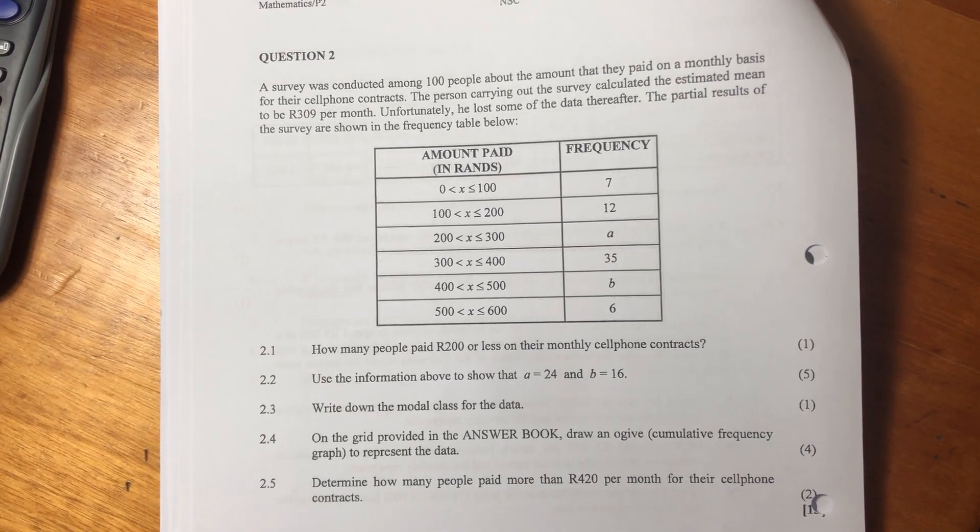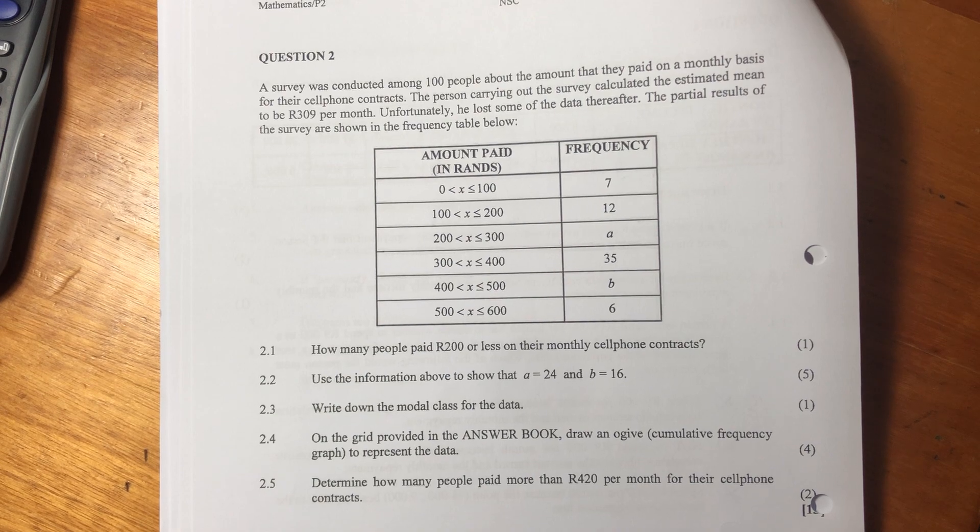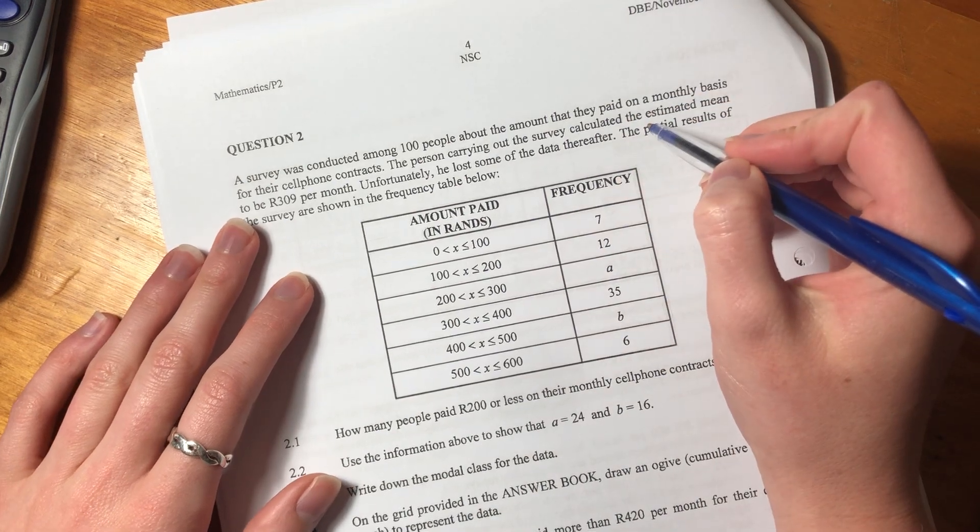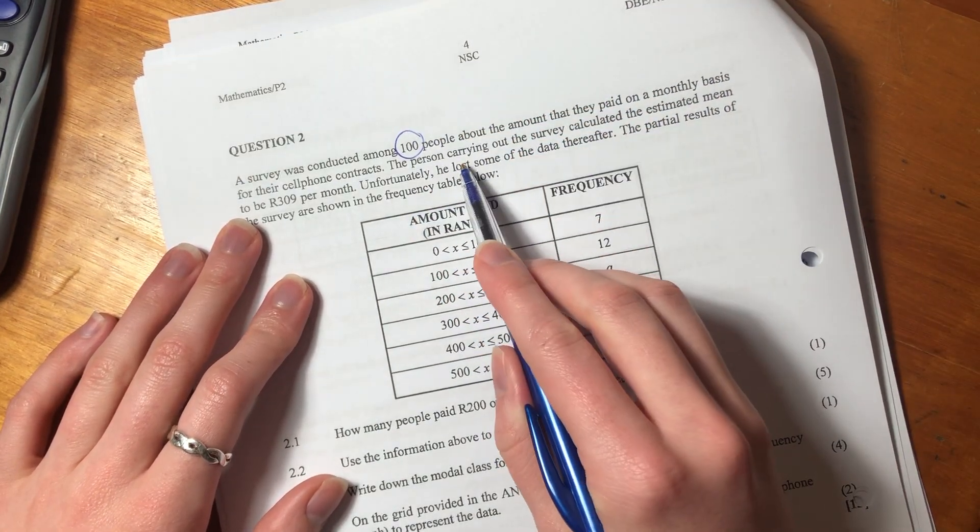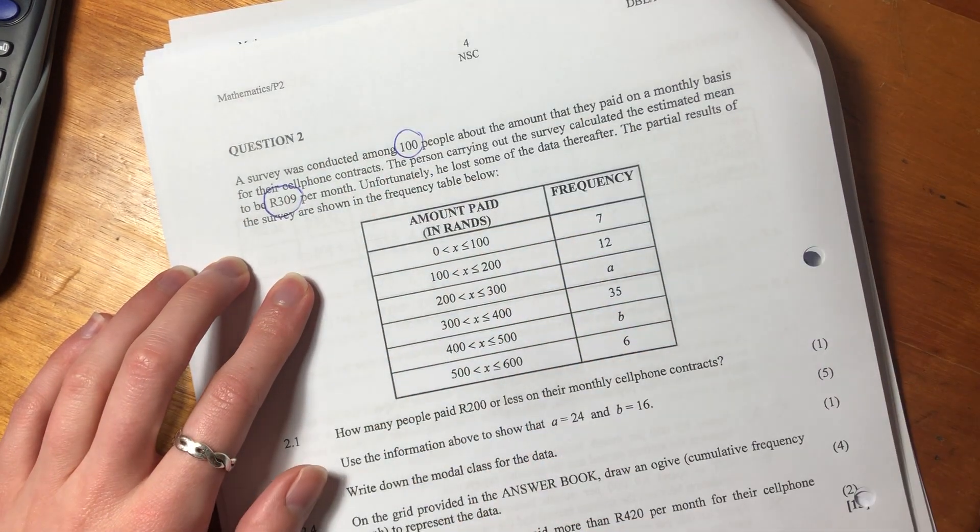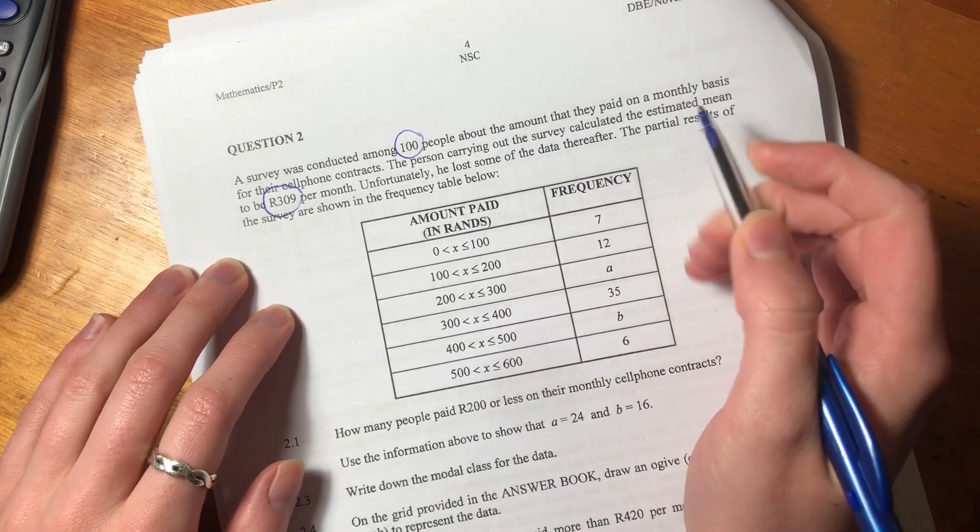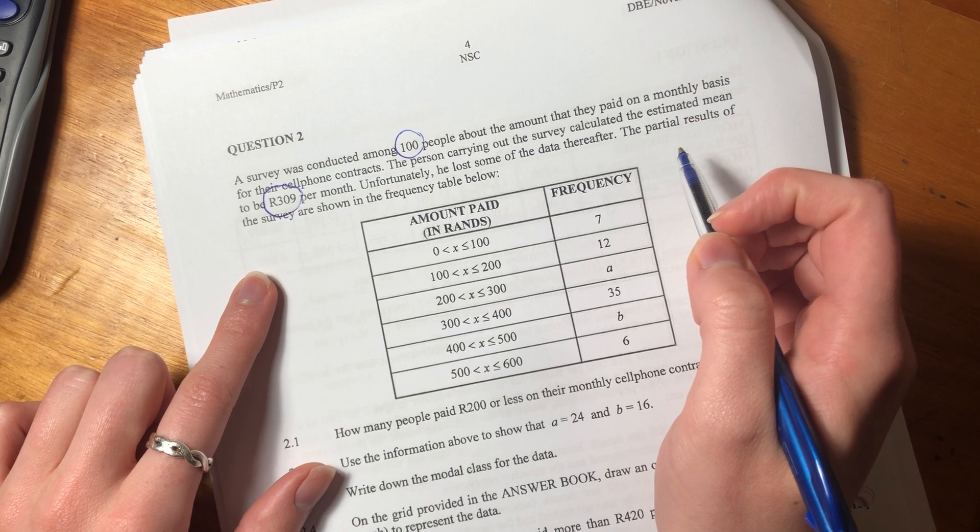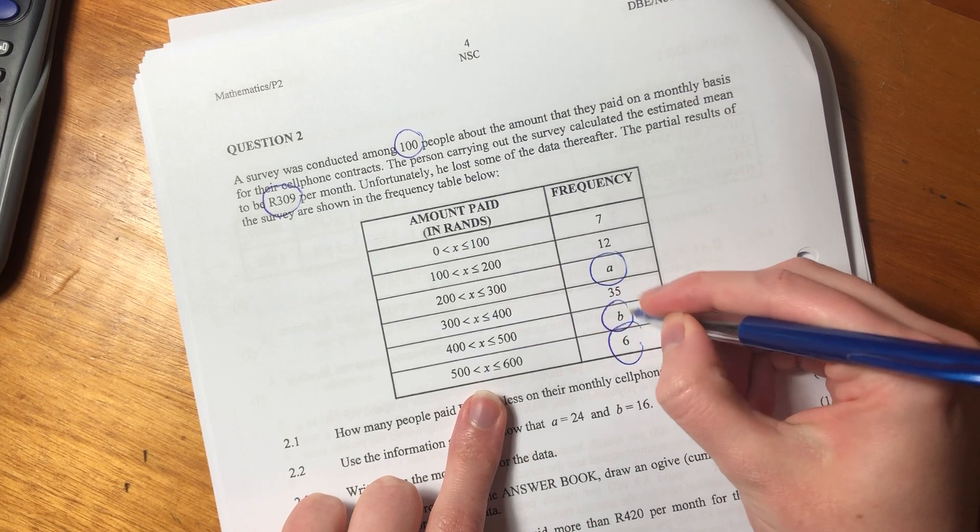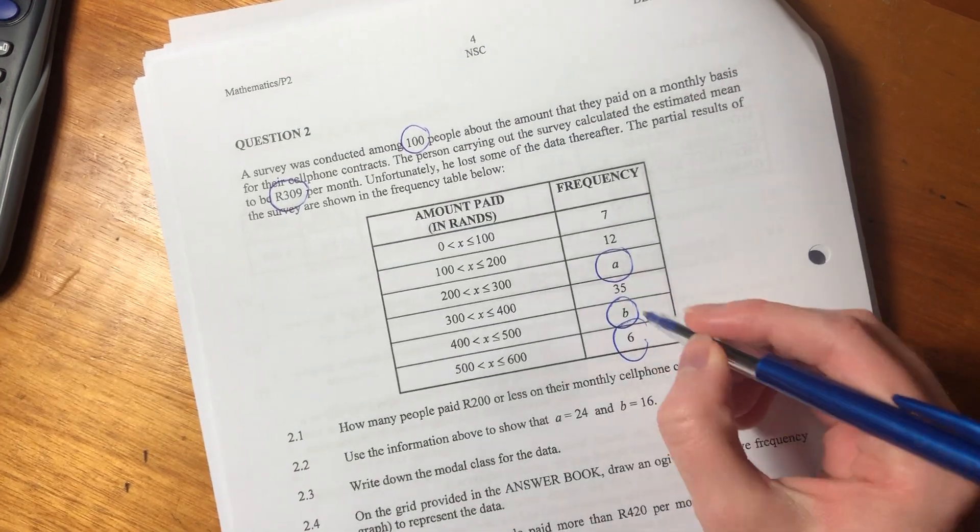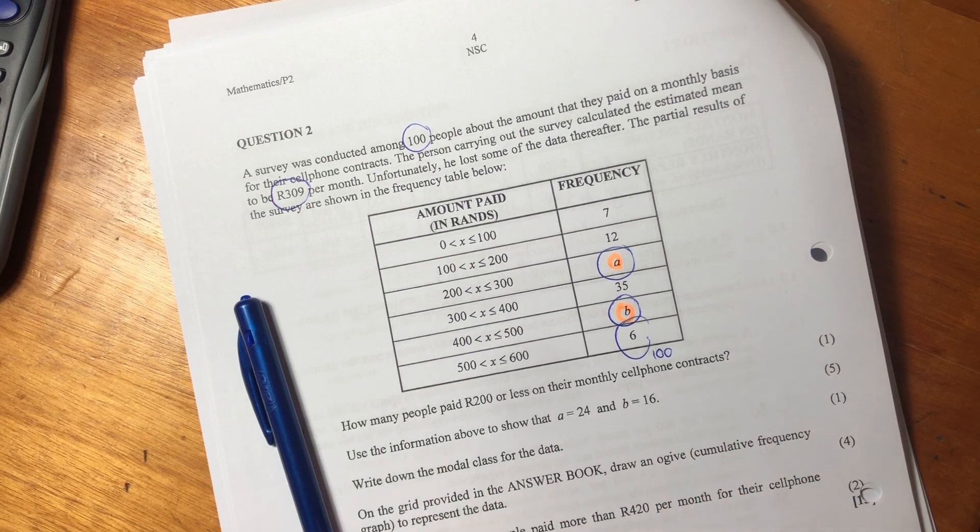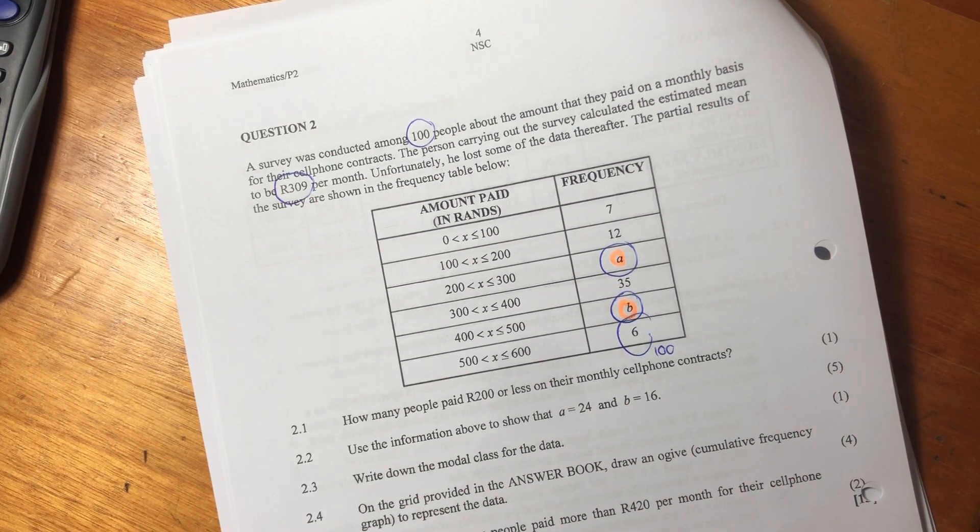Okay, let's do question two. A survey was conducted among 100 people about the amount that they paid on a monthly basis for their cell phone contracts. The person carrying out the survey calculated the estimated mean as 309 Rand per month. Unfortunately, he lost some of the data thereafter. The partial results of the survey are shown in a frequency table below. We see that we don't have A or B. Let me just get a highlighter. We know that all of these values, when we add them all up, need to add to 100, so we can probably figure out A and B.